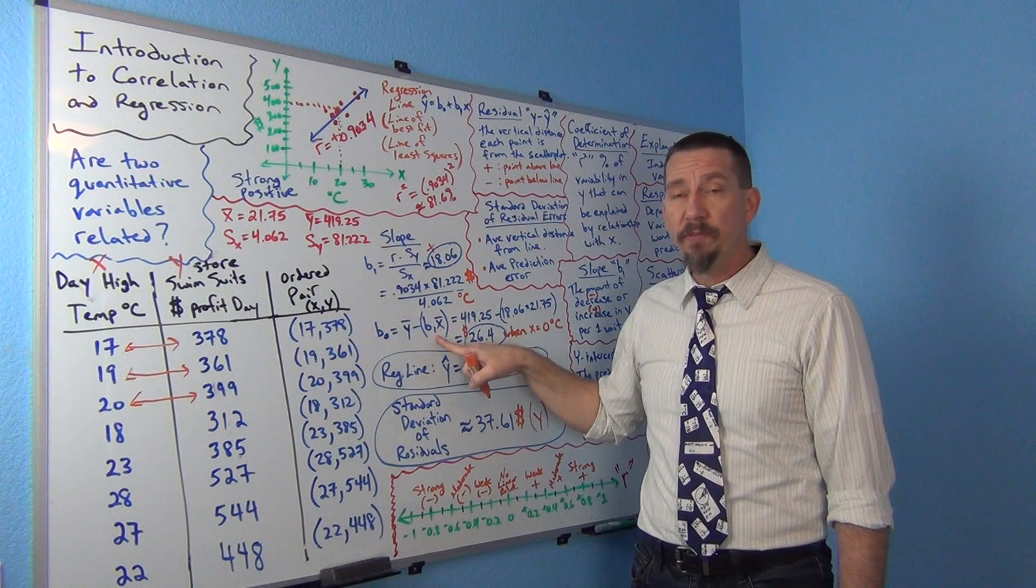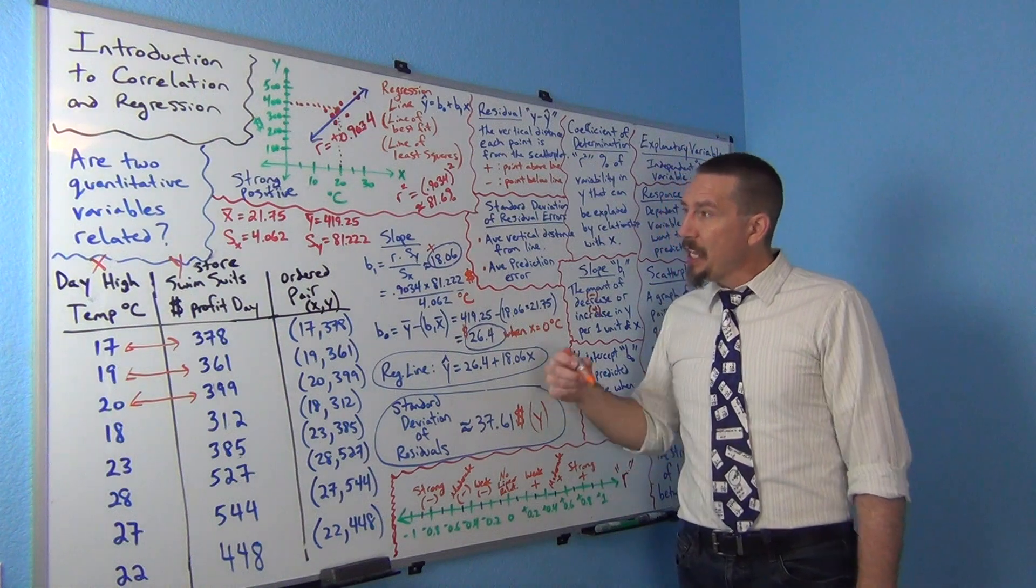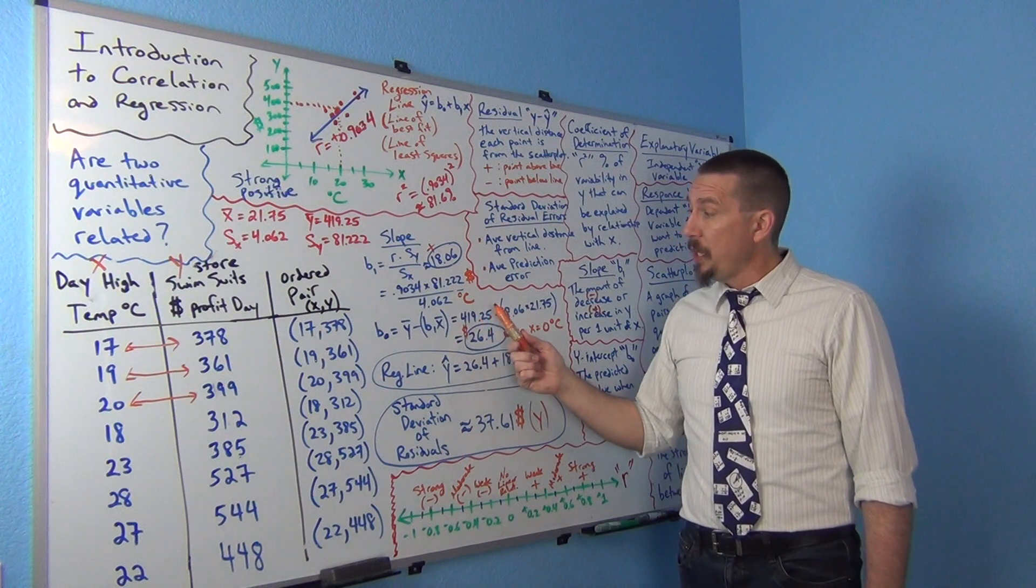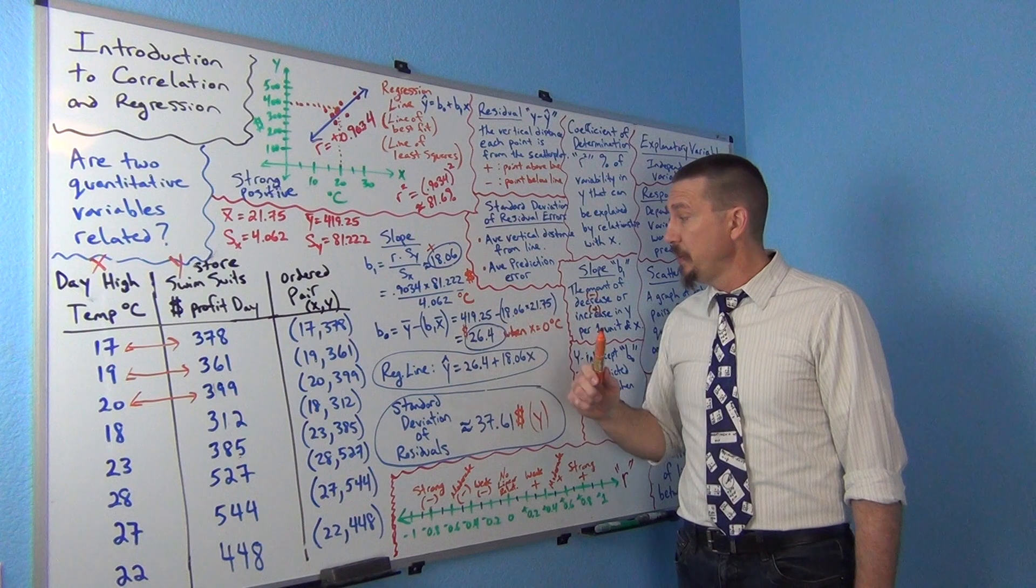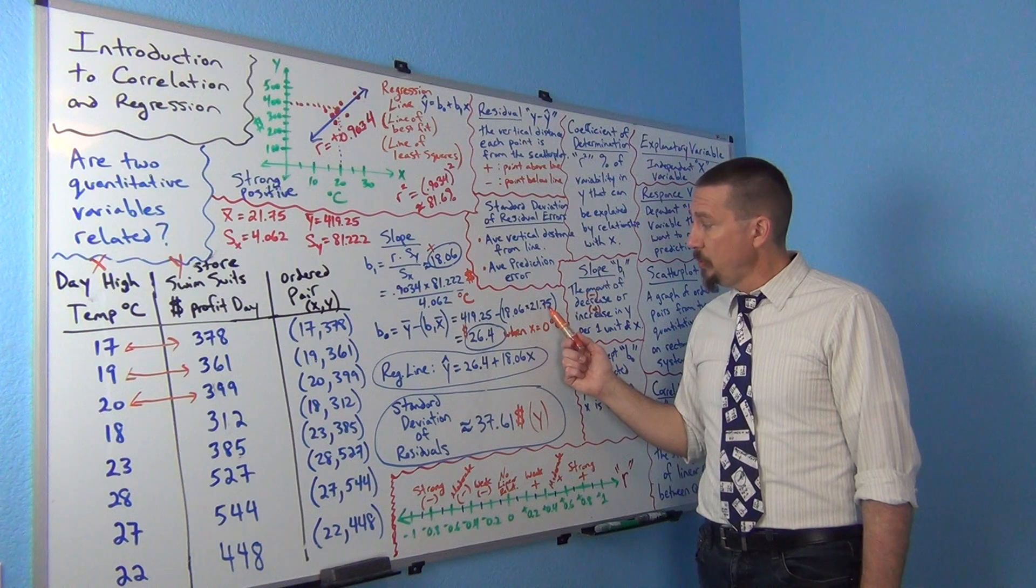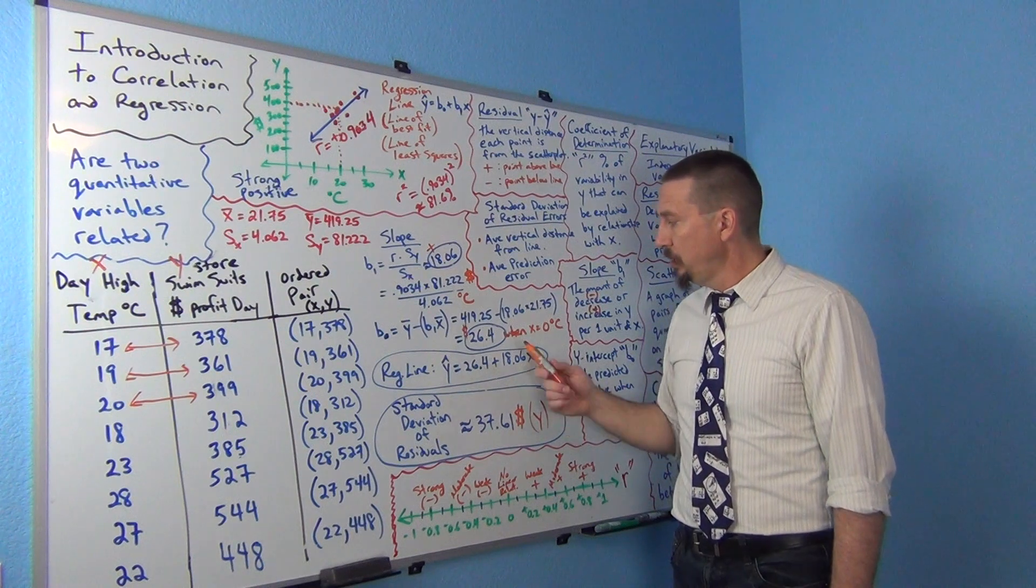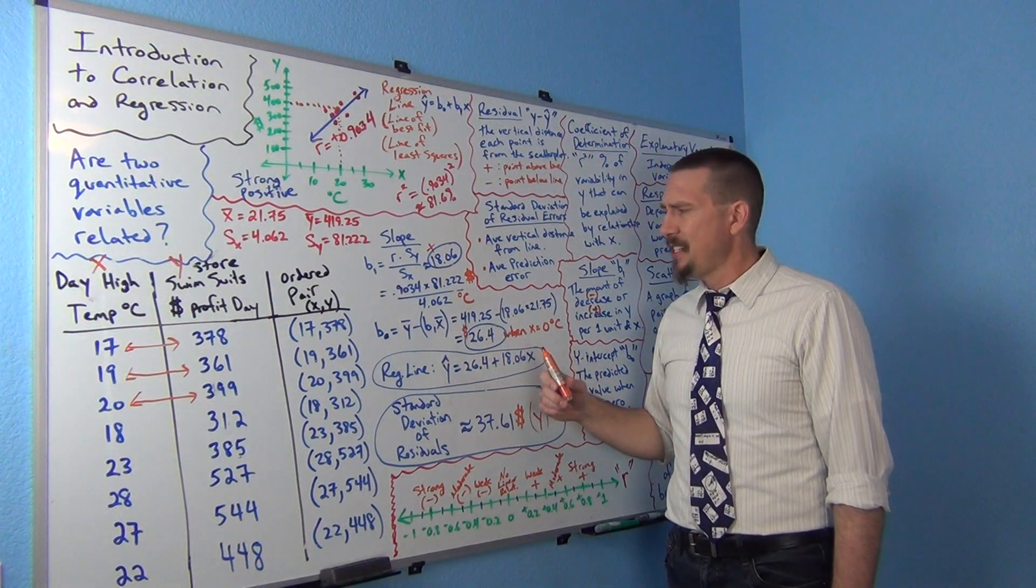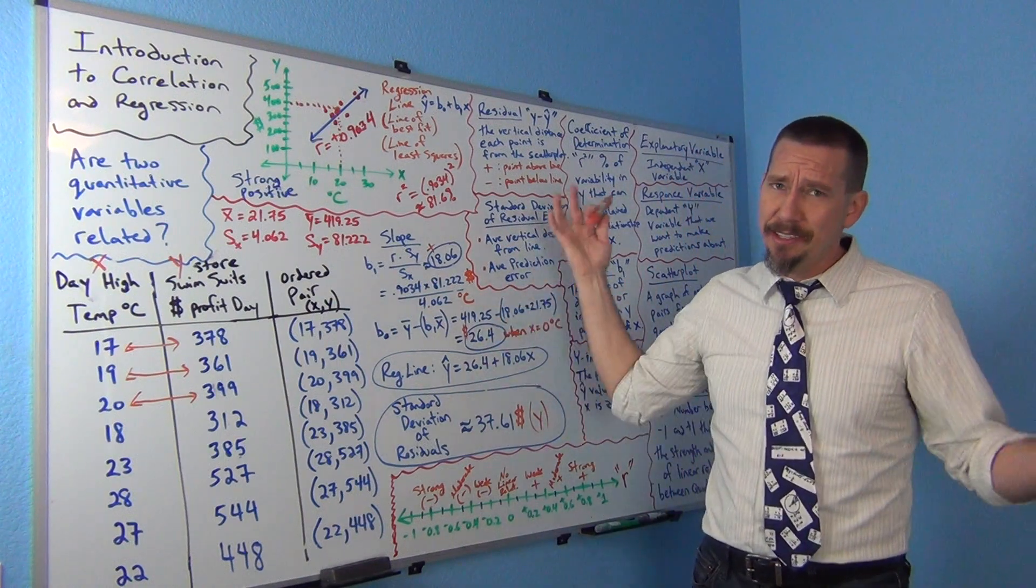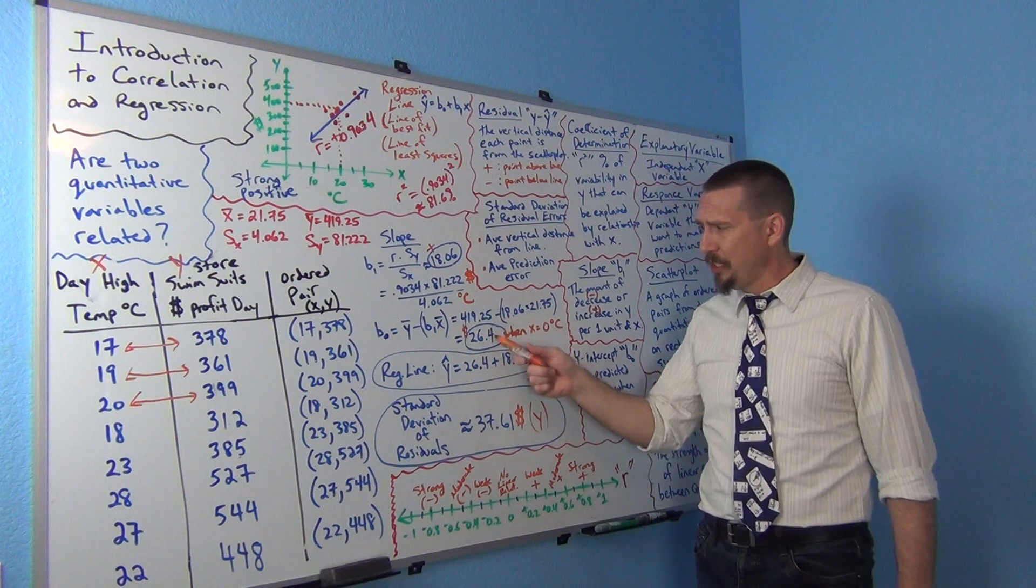Now you do have to do the multiplication first because order of operations, right? Multiplication comes before subtraction. So if I kind of plug in our numbers here and my 18.06, my slope, my y-intercept, sorry, my mean of the y's was $419.25 minus the slope, 18.06 times the mean of the x's, 21.75. And we get 26.4. I think when I had calculated on StatCato, they got 26.3. StatCato is definitely going to be more accurate than my calculation here because I'm rounding too much. StatCato and computer programs in general won't round that much and they'll get a little better accuracy.